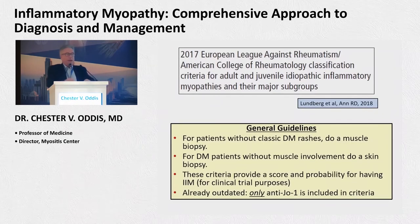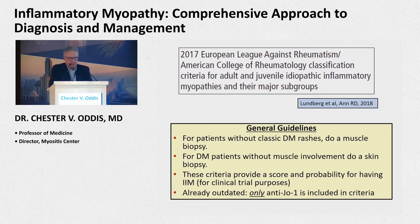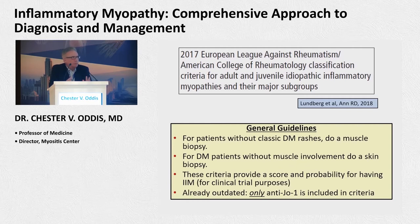To summarize: if patients don't have classic dermatomyositis rashes, do a biopsy. If you have DM patients with a classic rash and no muscle involvement, consider a skin biopsy. These criteria provide a score and a probability for having myositis, mainly for clinical trial purposes. And they're already outdated — just published within the past couple of years — because we get smarter every year as we learn more about autoantibodies.